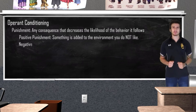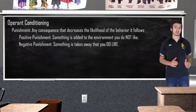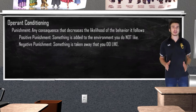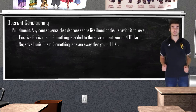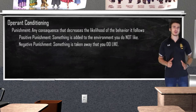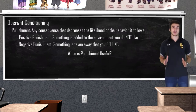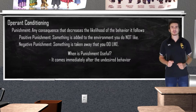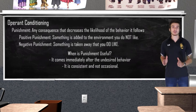Negative punishment is going to be punishment that results in something the organism likes being taken away. Teddy loves playing with his dog toys, but sometimes he is a little too aggressive with them. Negative punishment, or punishment by removal, would be me taking away a toy to get him to stop destroying them. Psychologists generally agree that reinforcement is better for behavior retention over punishment, but there are some times where punishment might be necessary. Punishment can be beneficial if it comes immediately after the undesirable behavior and if it is consistent and not occasional.